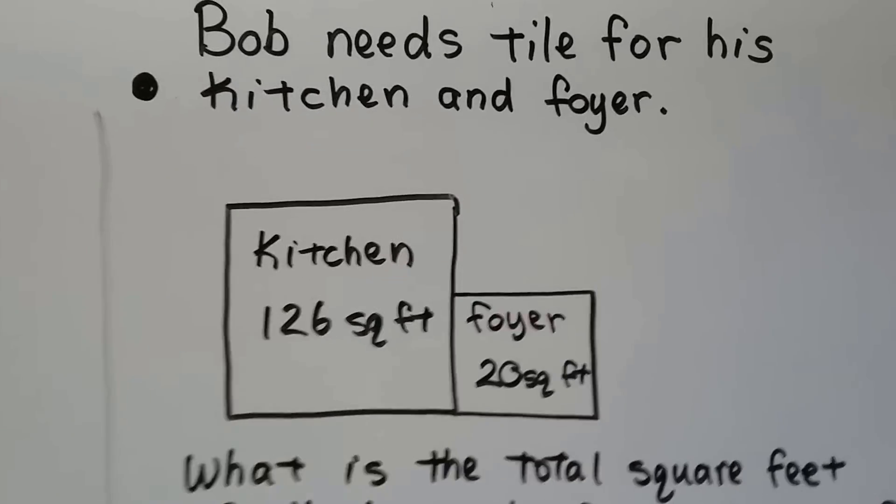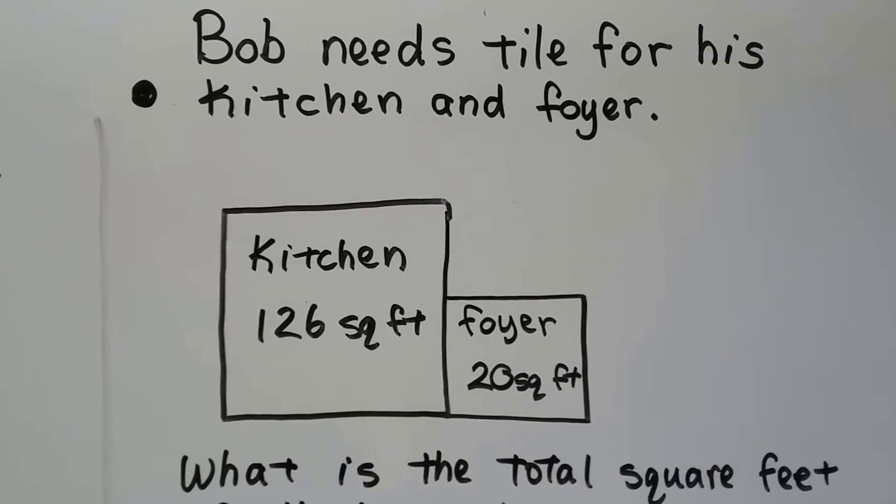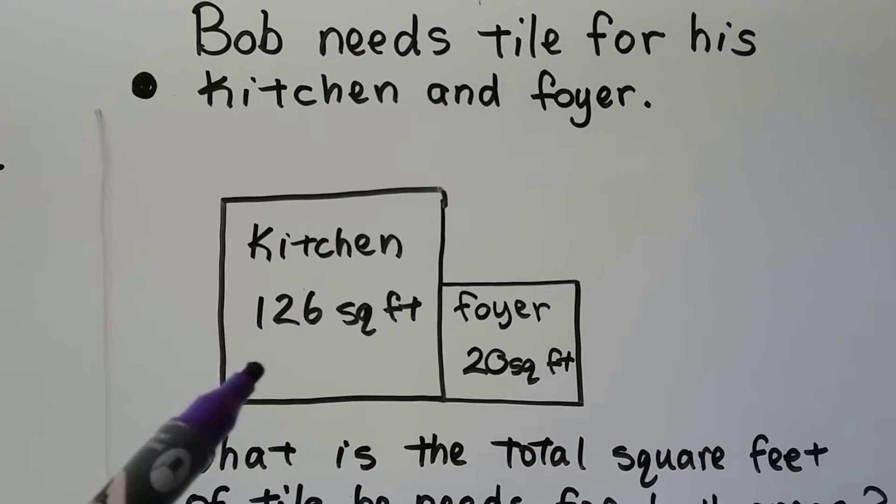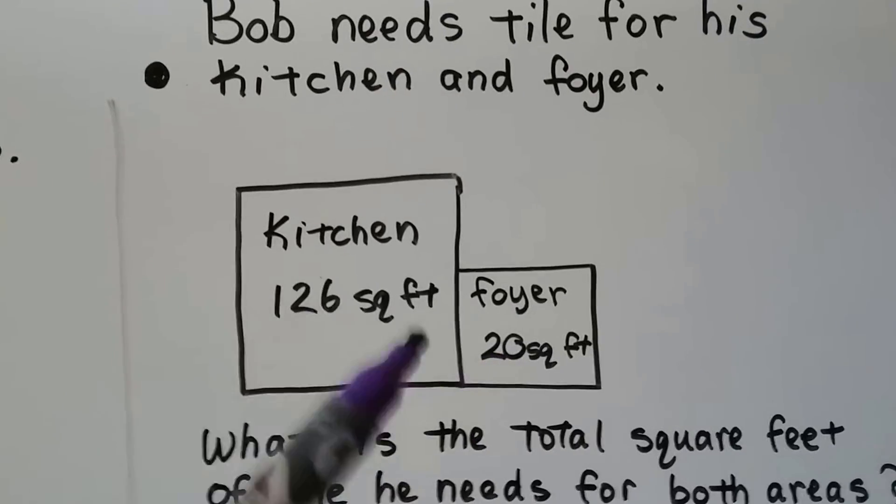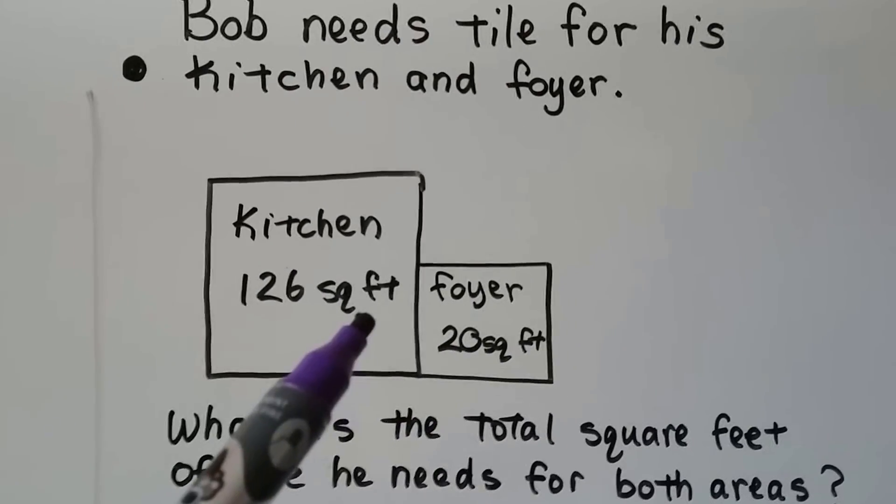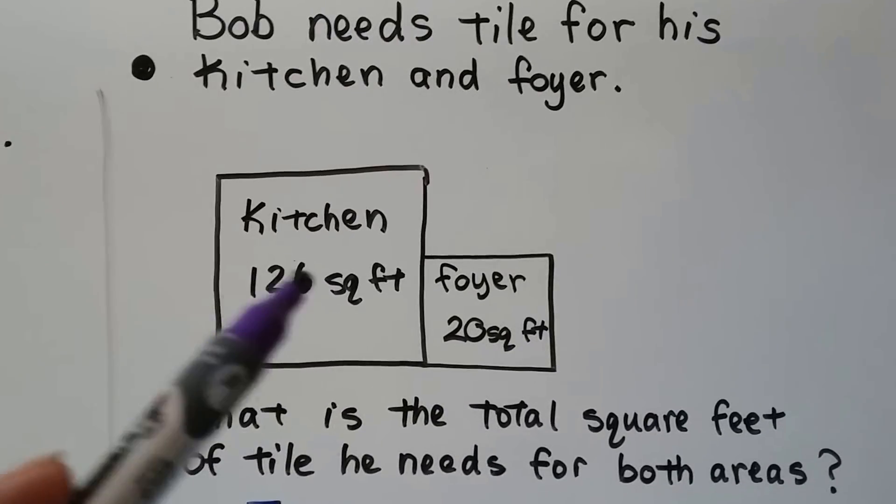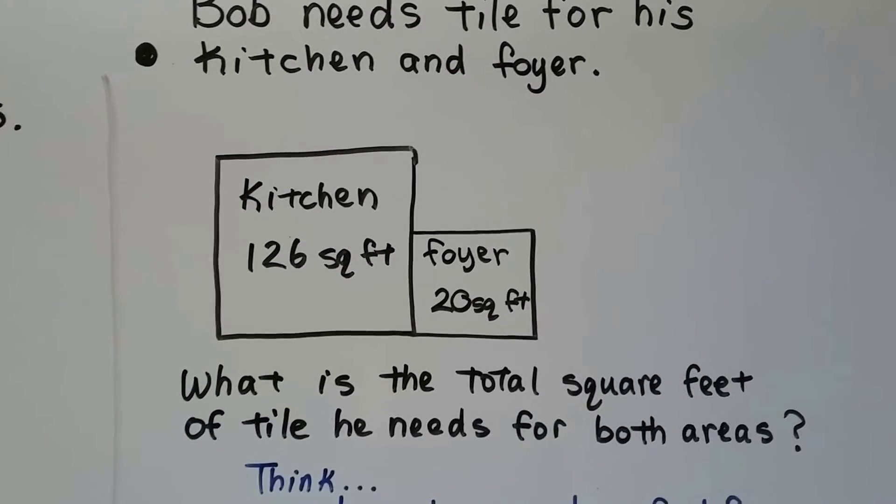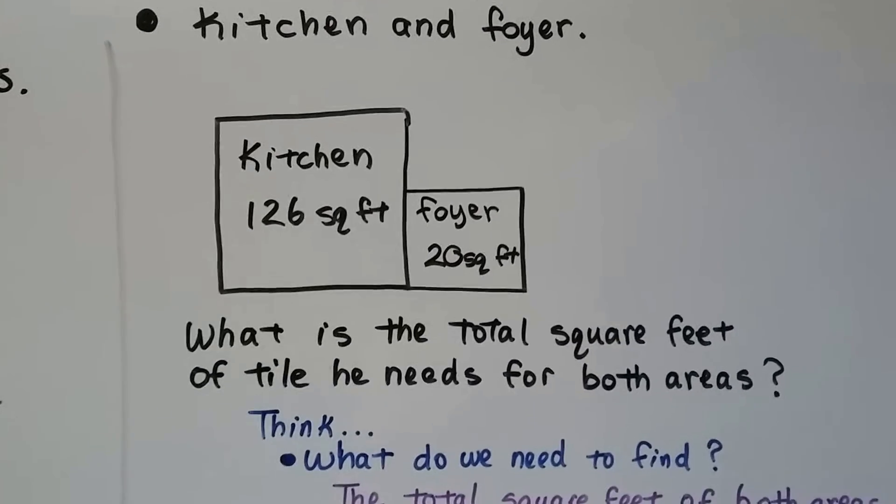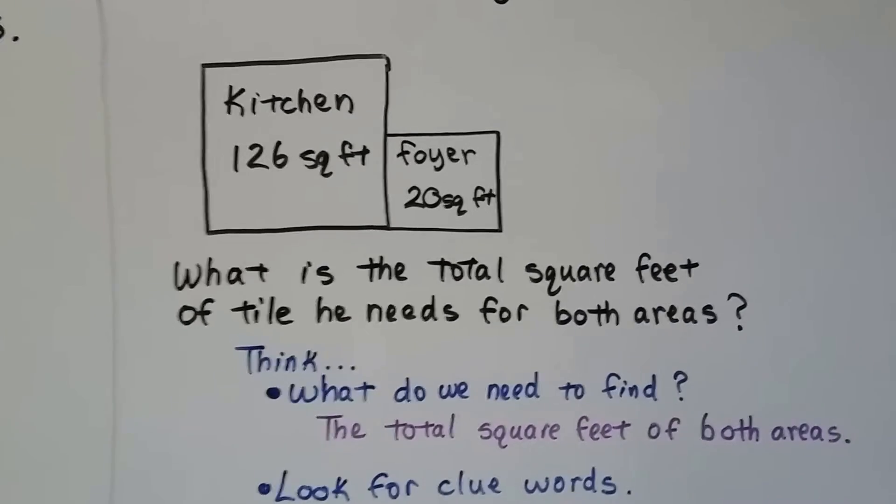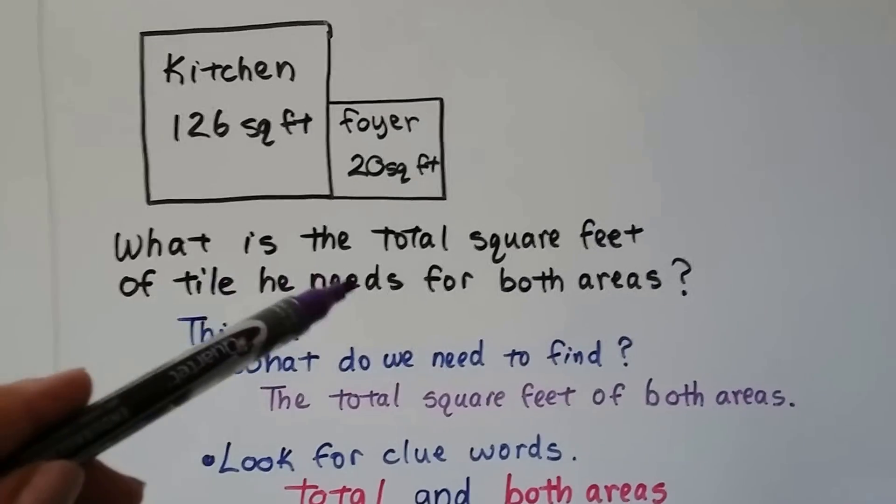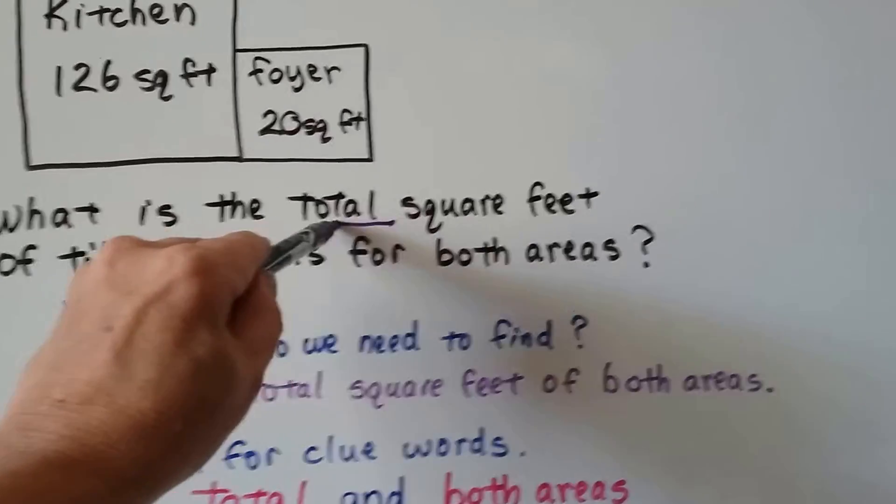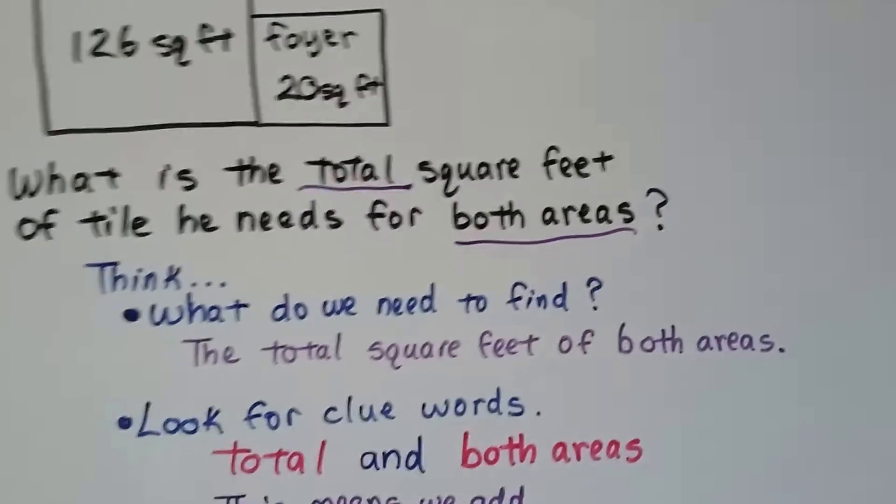See this one? Bob needs tile for his kitchen and foyer. There's 126 square feet and 20 square feet. So we don't need to figure out what the square footage is for each room. It gives it to us. It says what is the total square feet of tile he needs for both areas. So we think, what do we need to find? The total square feet of both areas. We look for the clue words. Total. And both areas.